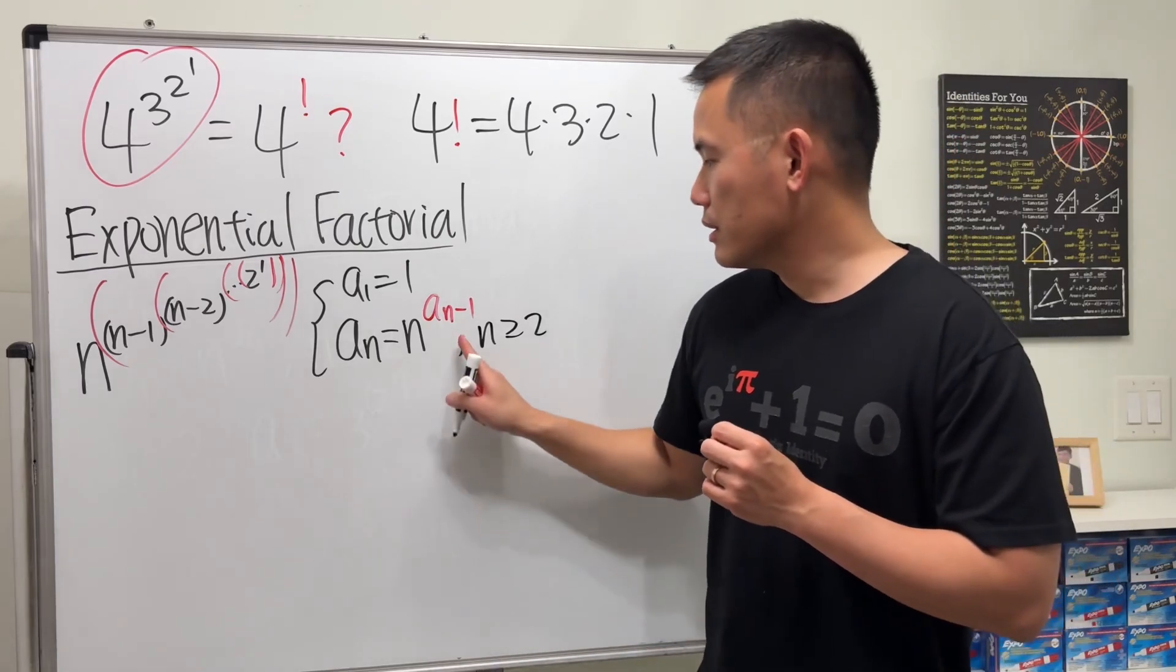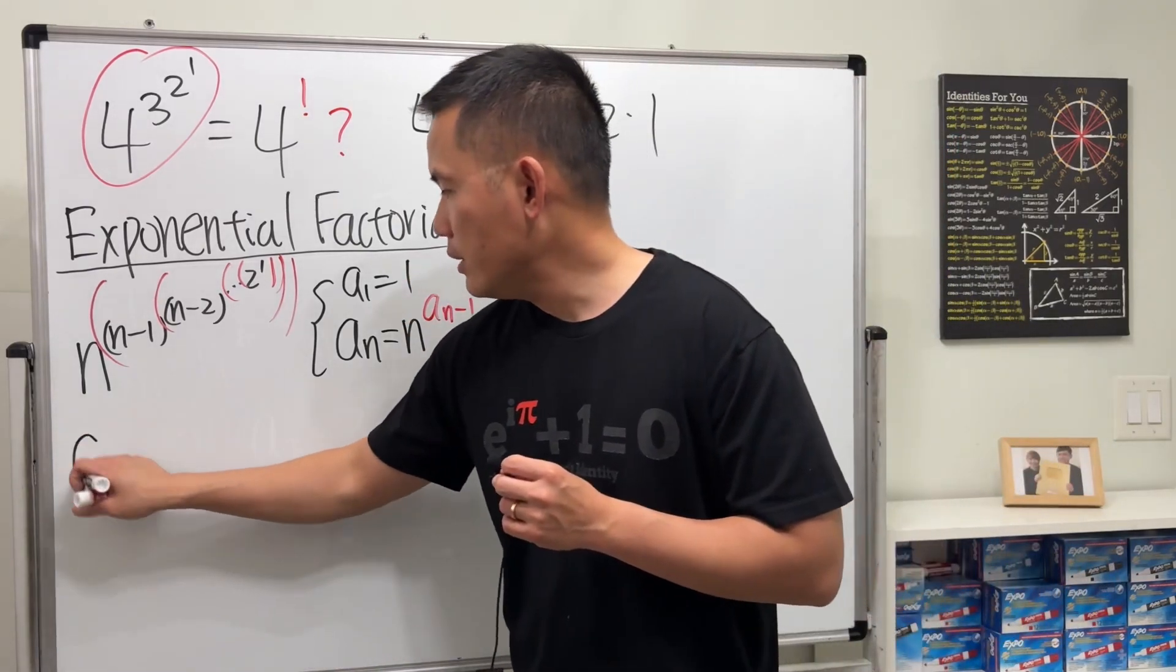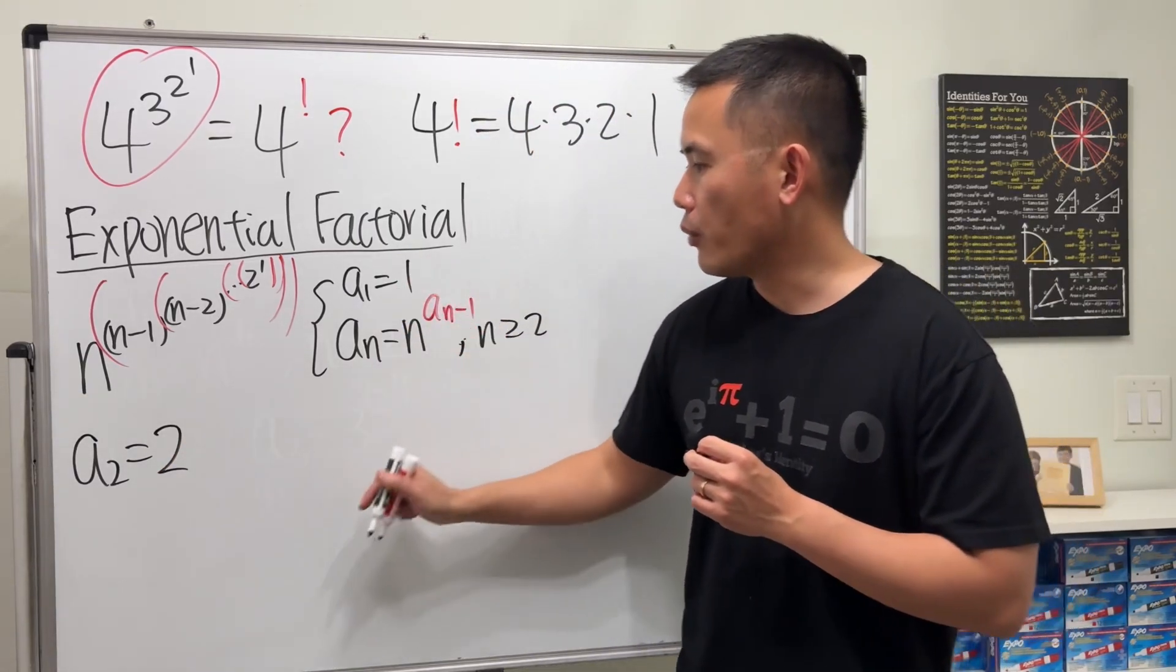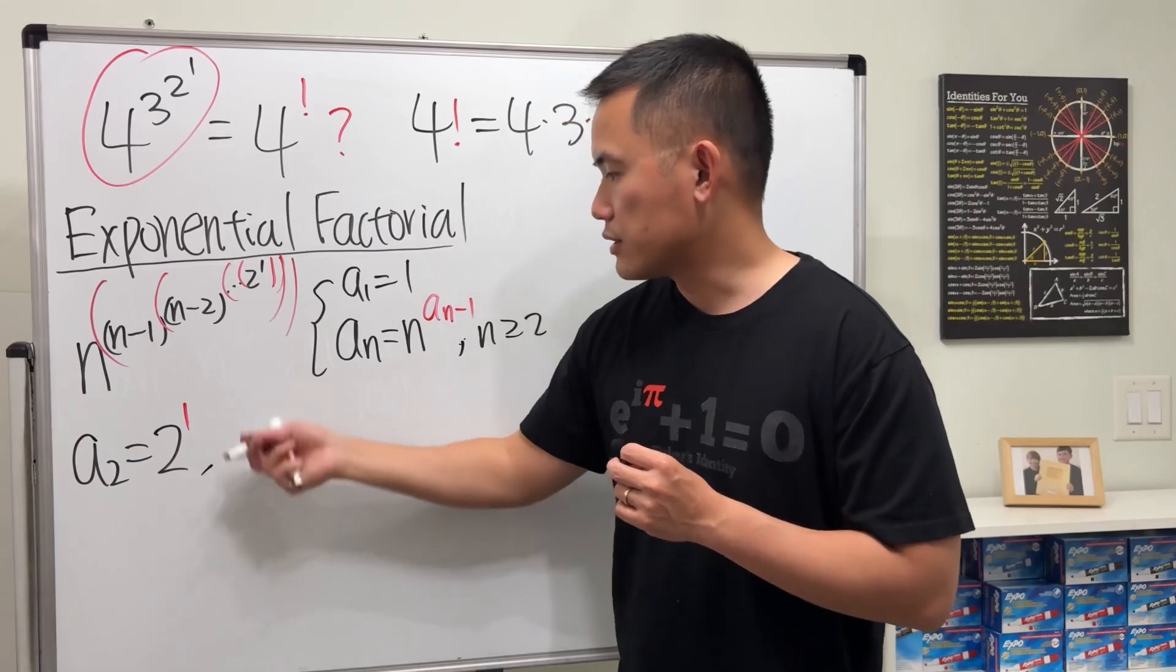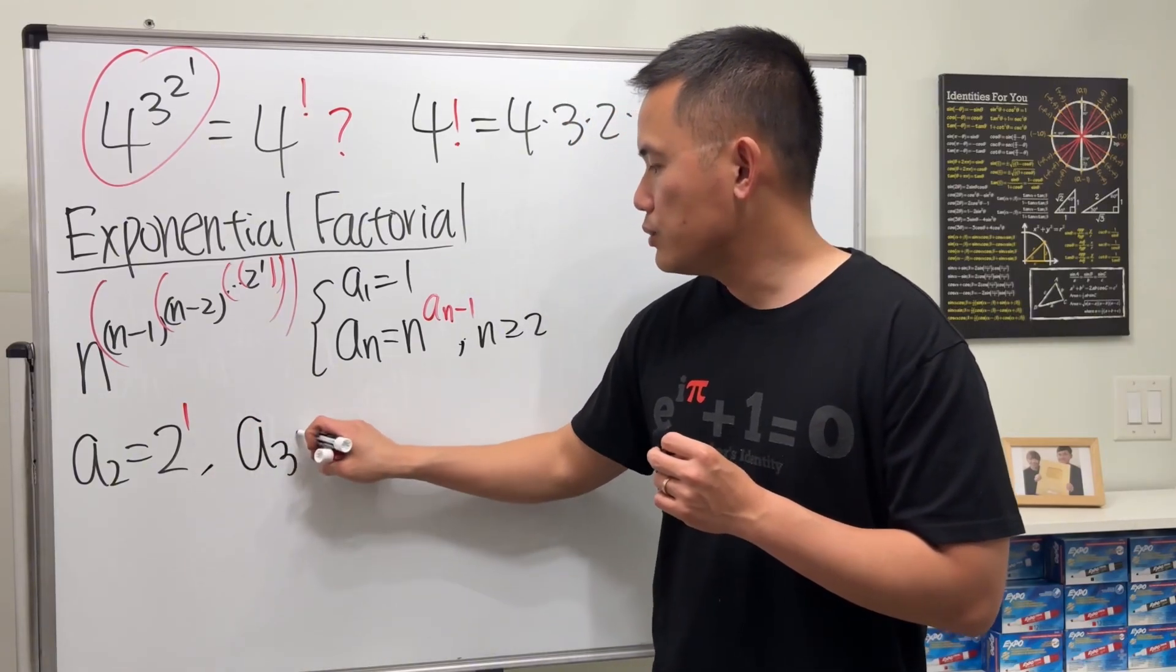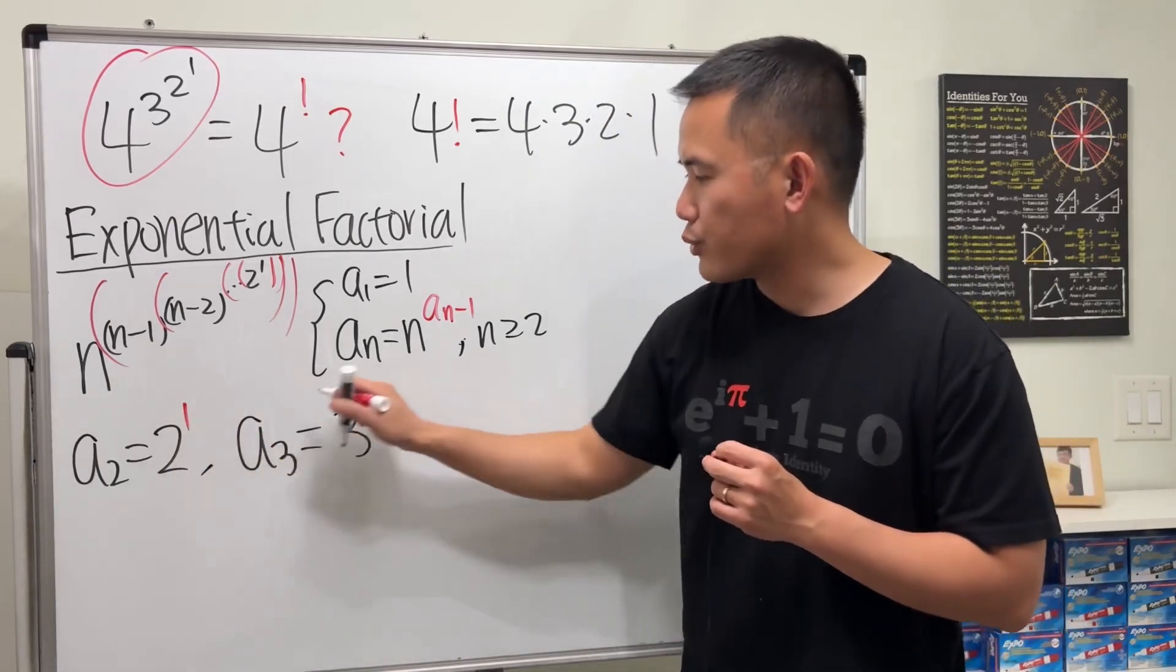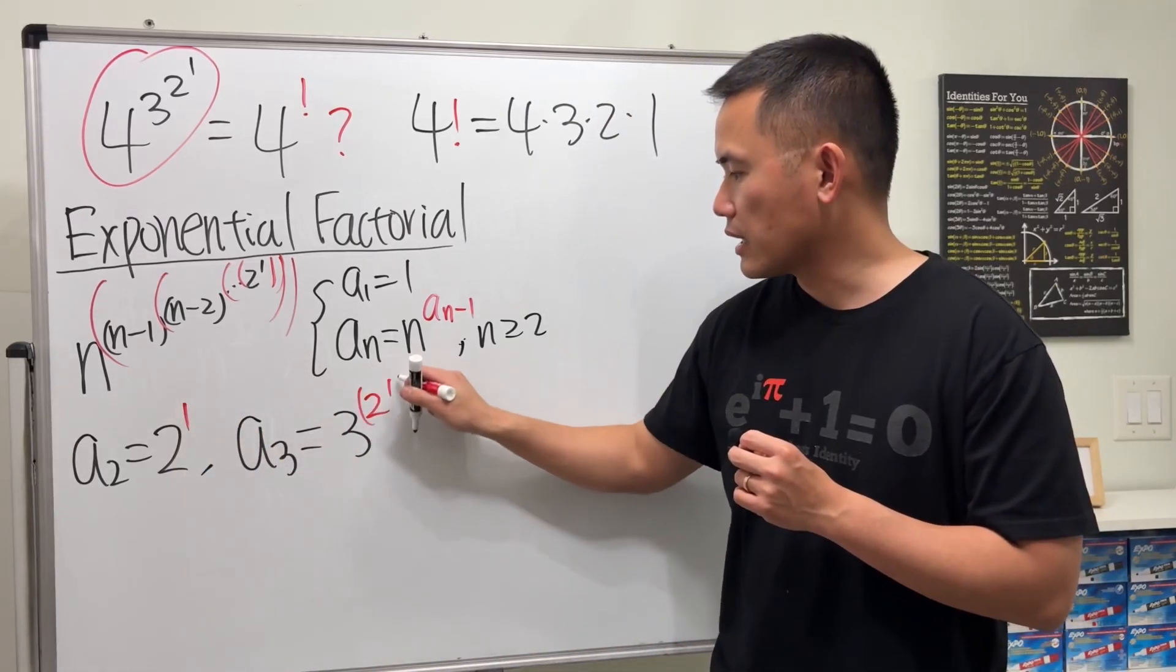So let's take a look. a1 is one, so a2 is just two for the base raised to the previous number for the power, which is one, and that's just two. Of course, a3 is equal to three for the base, and you put the previous power right here, previous number right here for the power, so it's like this.